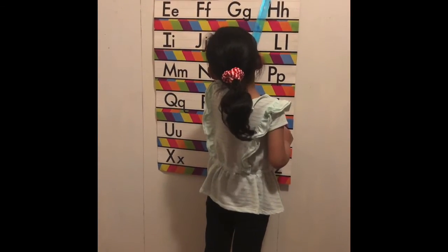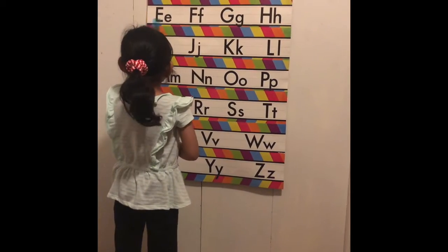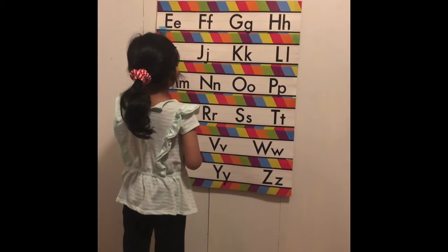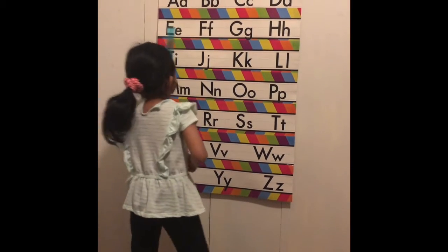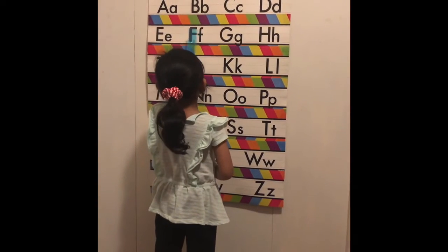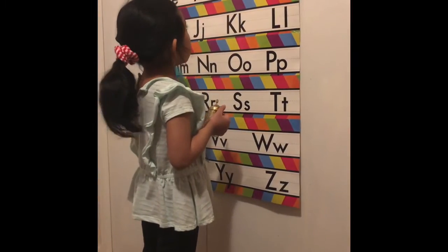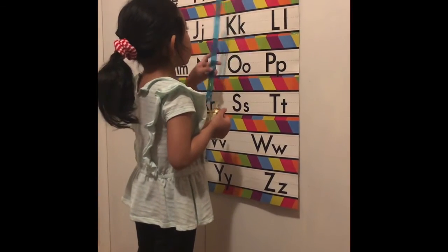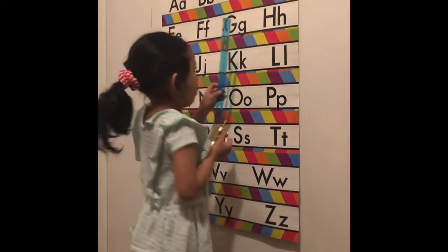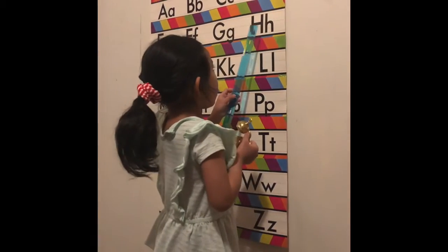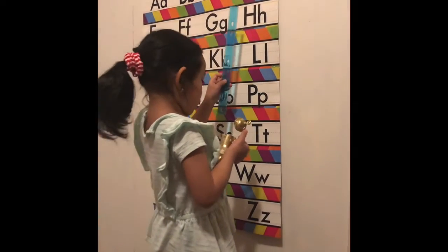E is for elephant. F is for fox. G is for goat. H is for hat.